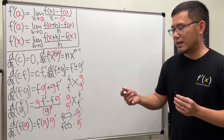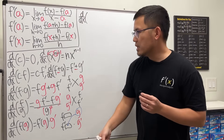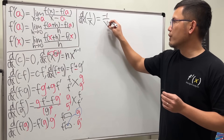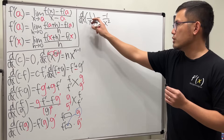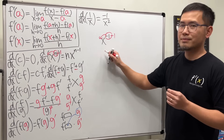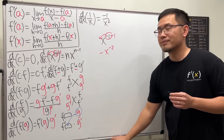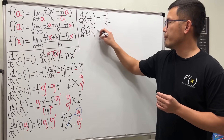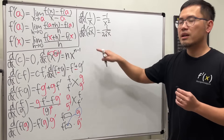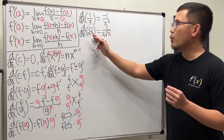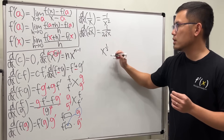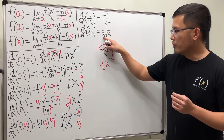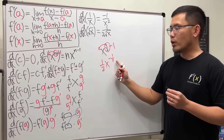Now here are derivatives of common functions. First, the derivative of 1 over x is negative 1 over x squared. You can see this by writing 1/x as x to the negative 1, bringing the power to the front, giving negative x to the negative 2. Similarly, the derivative of the square root of x is 1 over 2 times the square root of x, because √x equals x to the one-half — bring one-half to the front and subtract 1, giving one-half times x to the negative one-half.